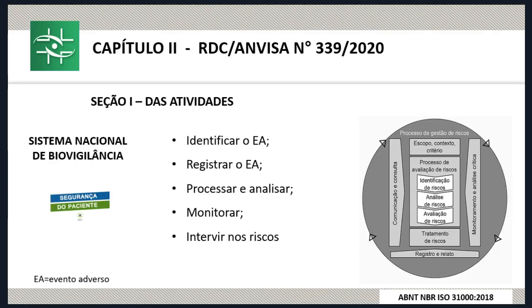No capítulo 2, seção 1, a norma determina as atividades do Sistema Nacional de Biovigilância. De forma geral, os integrantes do sistema vão ter que identificar o evento adverso, registrar o evento identificado, processar e analisar as informações, além de monitorá-las e intervir nos riscos. Isso nada mais é do que o processo de gestão de riscos da ABNT ISO 31.000. A finalidade do monitoramento é obter informações sobre prováveis efeitos adversos, não desejados ou inesperados, que podem surgir ao longo do uso terapêutico de órgãos, tecidos e células.